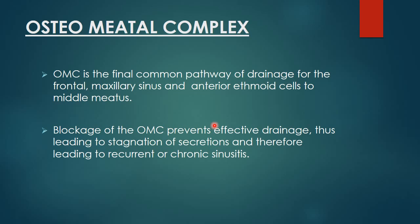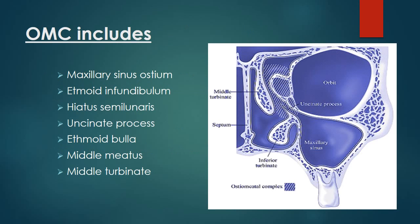Coming on to the osteomeatal complex: it is the final common pathway of drainage for the frontal, maxillary, and anterior ethmoid cells to the middle meatus. All these sinuses drain into the middle meatus through the osteomeatal complex. Blockage of the osteomeatal complex prevents effective drainage, leading to stagnation of secretions and therefore recurrent or chronic sinusitis. The osteomeatal complex is not a single anatomical entity; it consists of the maxillary sinus ostium, ethmoid infundibulum, hiatus semilunaris, uncinate process, ethmoid bulla, middle meatus, and middle turbinate.